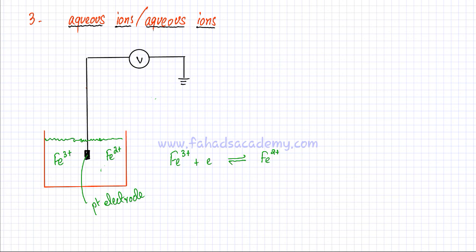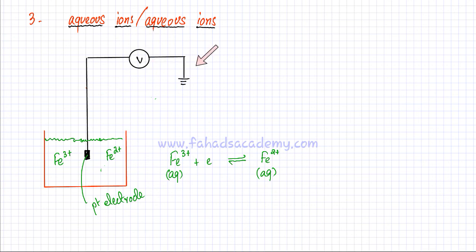Eventually an equilibrium is established where Fe³⁺ is gaining electrons and at the same time Fe²⁺ is losing electrons — a reversible reaction set up between two aqueous ions. You can then measure the E-nought of this electrode by connecting it to a voltmeter with a ground at zero potential. Looking at the data booklet, the E-nought for this electrode comes out to be +0.77 volts.